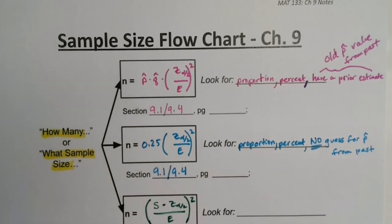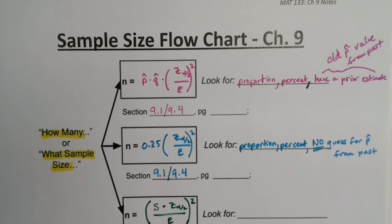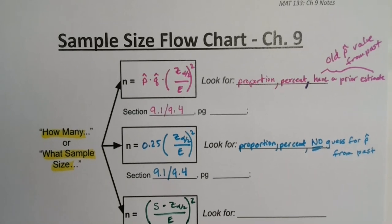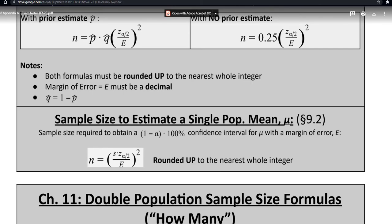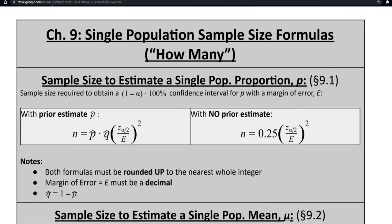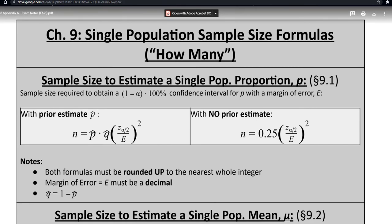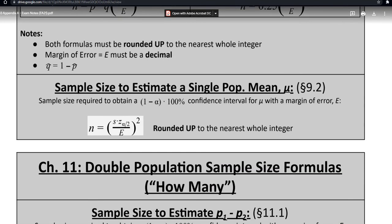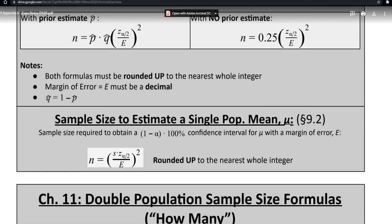Both of those proportion formulas came from section 9-1, though I covered them in section 9-4. You can find all three formulas in the exam notes packet. The first formula is in the top-left box, the second is in the top-right box, and the third is in the second box on that page.